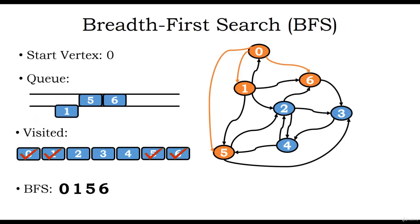We dequeue another element and the dequeued element is vertex 1. We now traverse through all the edges of vertex 1. Through the first edge we can visit vertex 2, which is not yet visited, so we visit vertex 2, mark it as visited, and enqueue it. Through the next edge we can visit vertex 5, but vertex 5 is already visited. We can visit vertex 6, but vertex 6 is already visited. The next vertex reachable is vertex 0, which is also already visited.